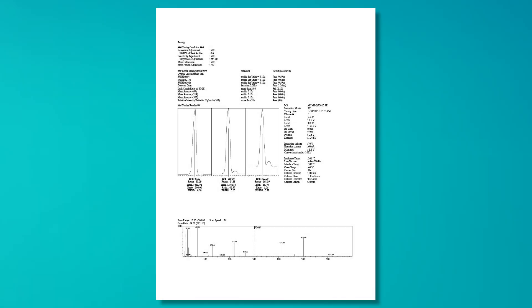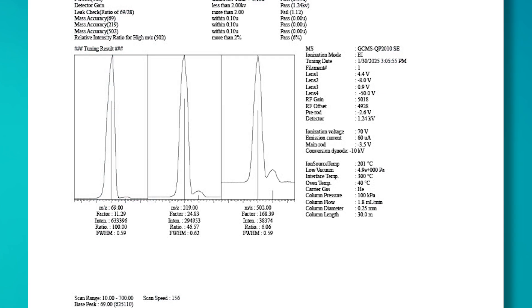If your instrument's performance has been suffering, it may be time to clean or replace your ion source. Check the Lens 1 voltage in your Auto-Tune report. If it is greater than 3 volts, this indicates contamination and that the ion source should be cleaned or replaced.